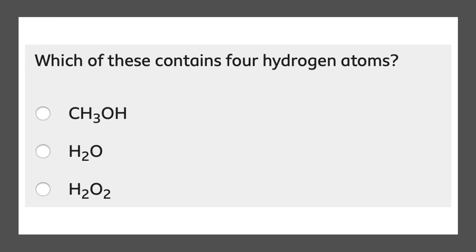Next question: which of these contains 4 hydrogen atoms? Hydrogen is H. Over here, there are 3 hydrogen atoms over here and 1 hydrogen atom over here. So 3 plus 1 equals 4. So we know that this one is going to be the correct one. This one only contains 2 hydrogen atoms and this one only contains 2 as well. So that will get you 1 mark.